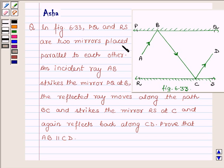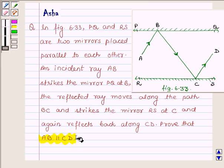An incident ray AB strikes the mirror PQ at B. The reflected ray moves along the path BC and strikes the mirror RS at C and again reflects back along CD. Prove that AB is parallel to CD.